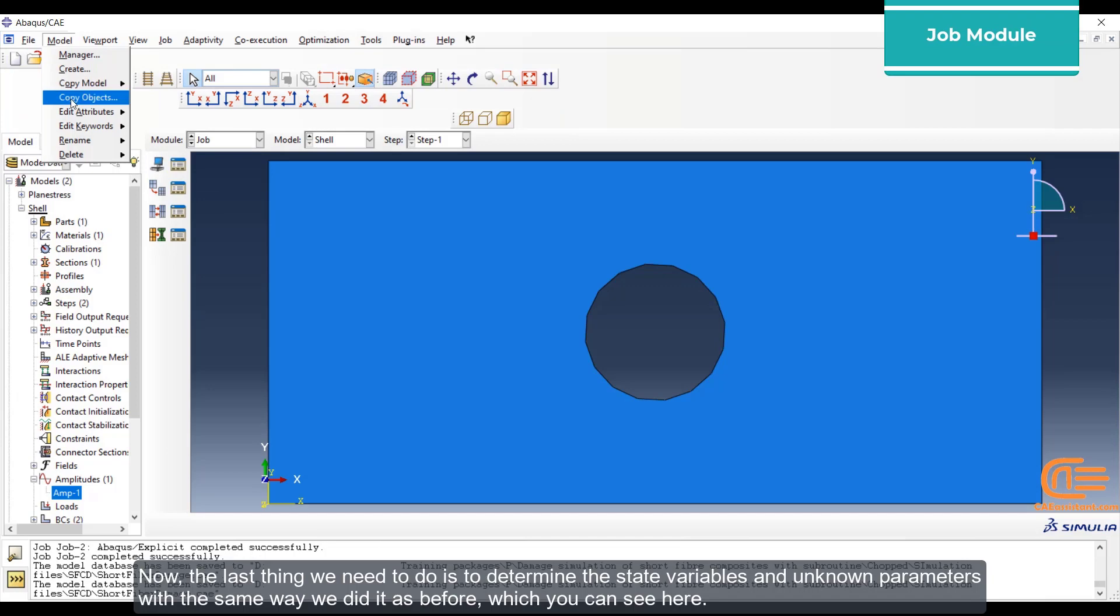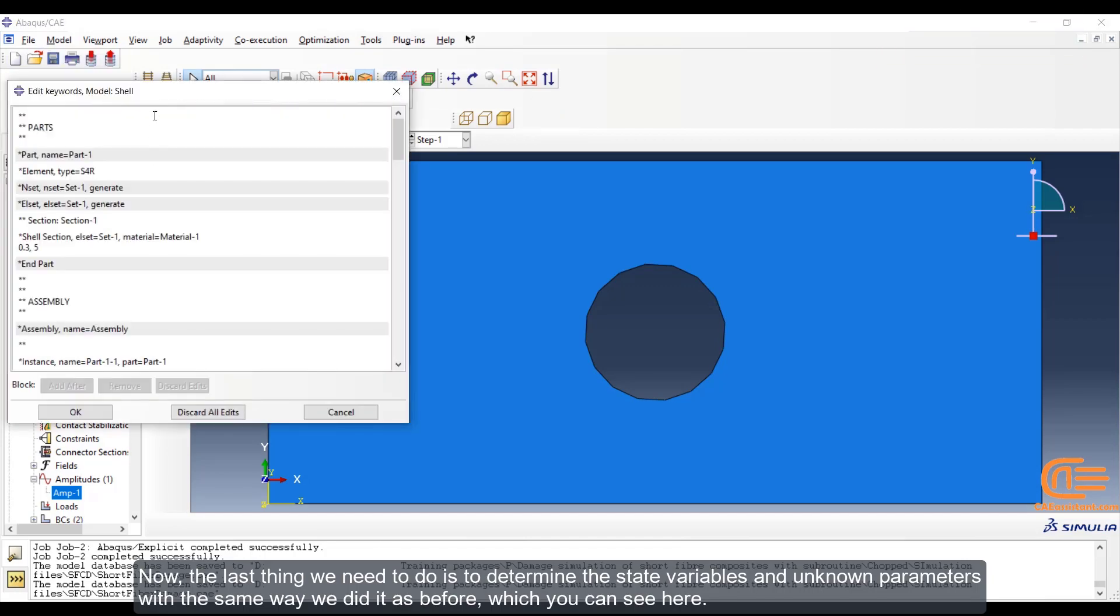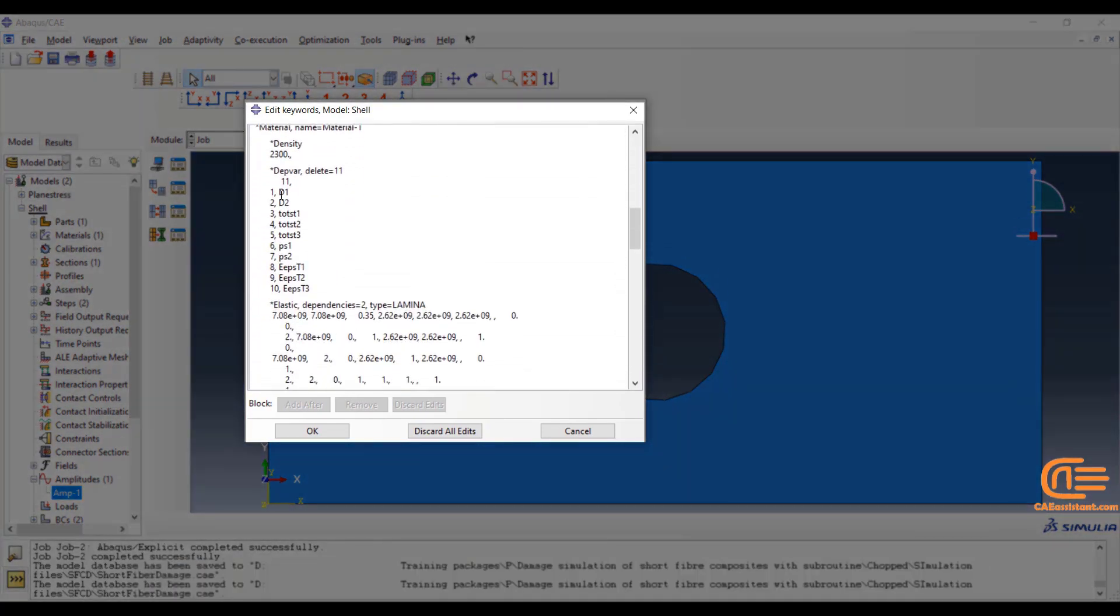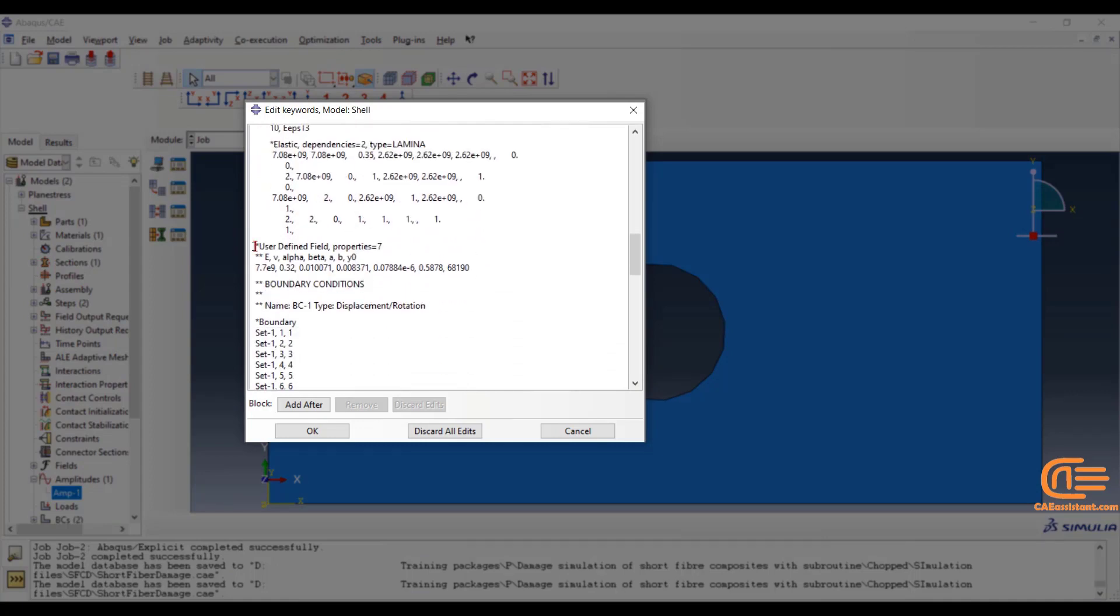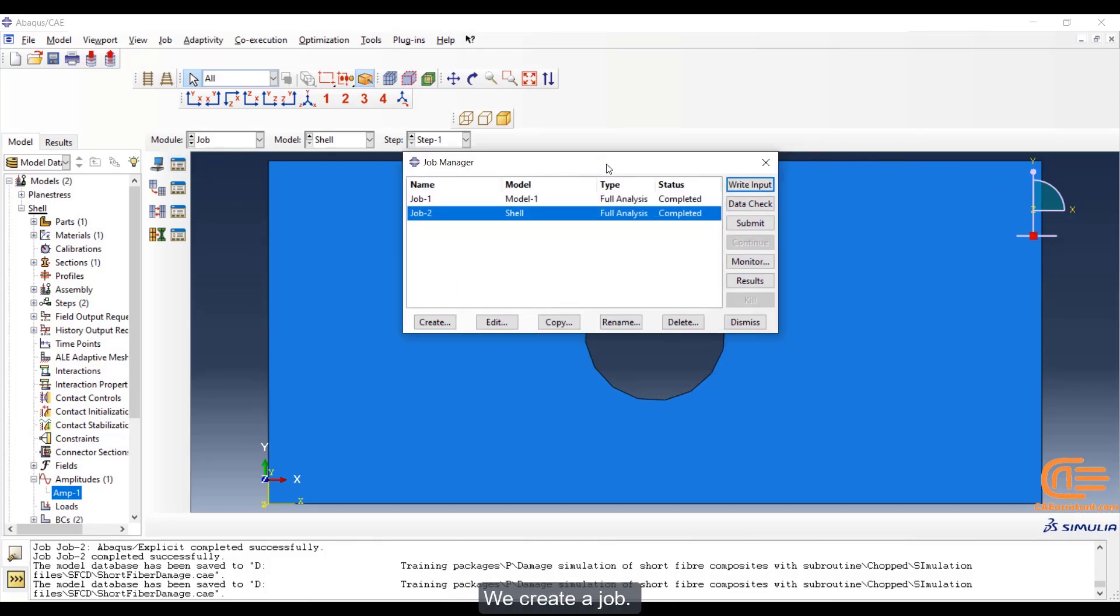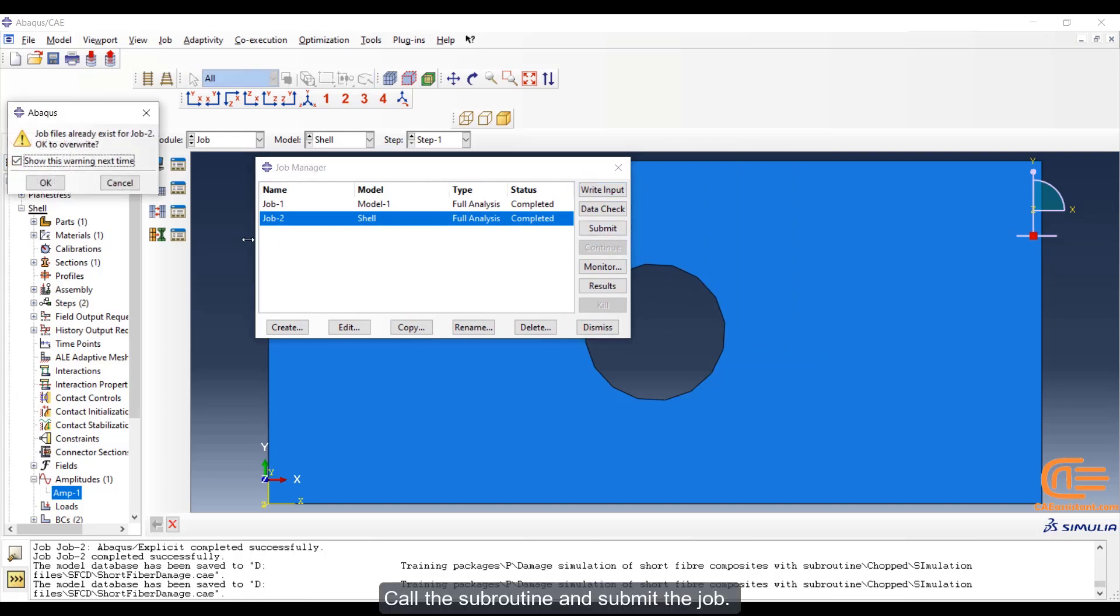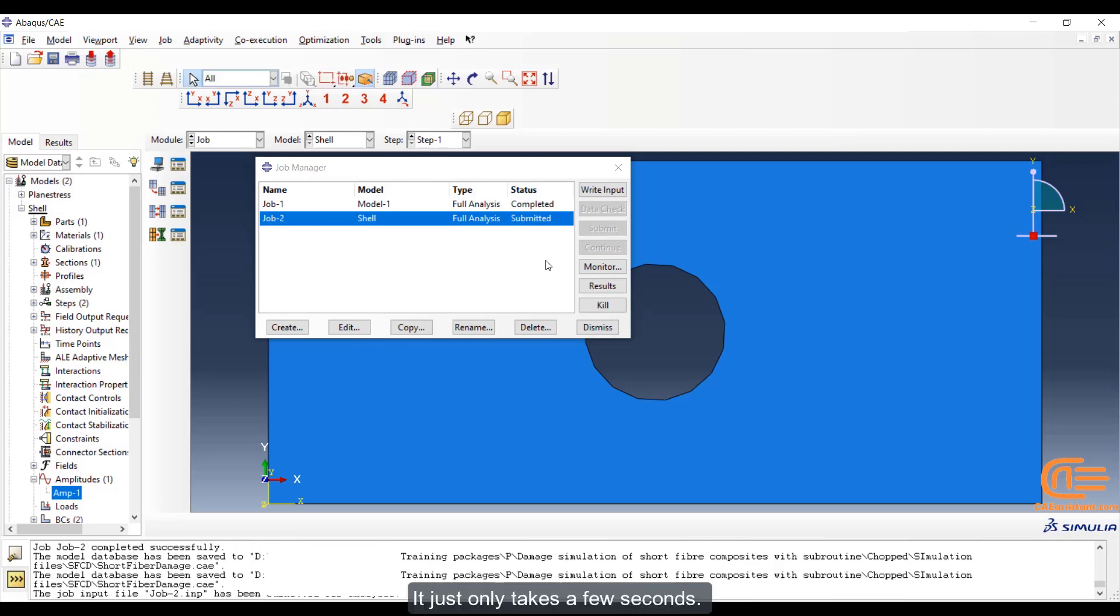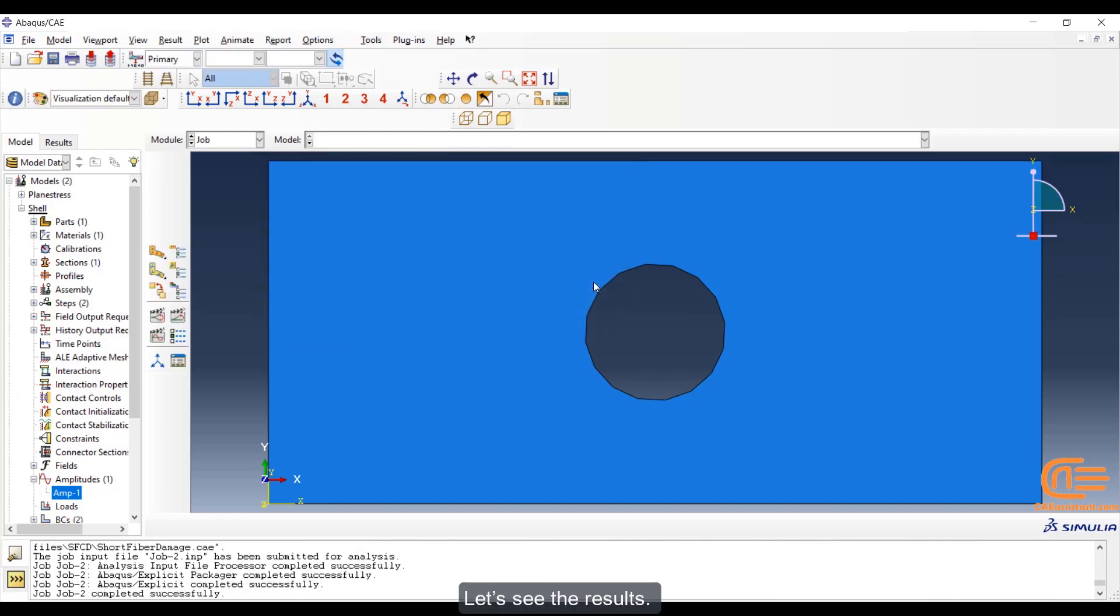Now the last thing we need to do is to determine the state variables and unknown parameters with the same way we did it as before. Now everything is set. We create a job, call the subroutine and submit the job. It just only takes a few seconds. Let's see the results.